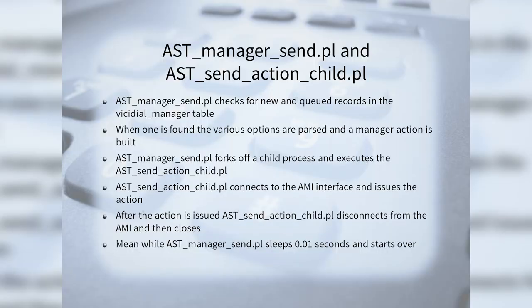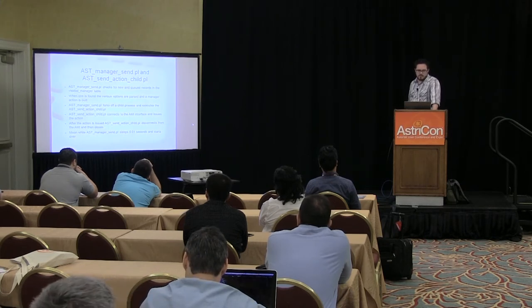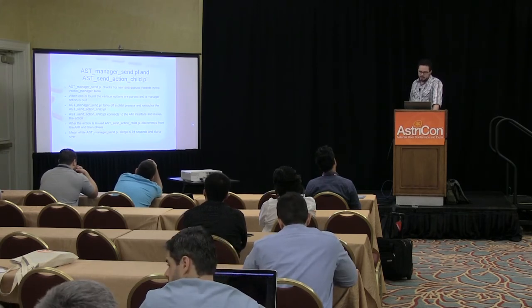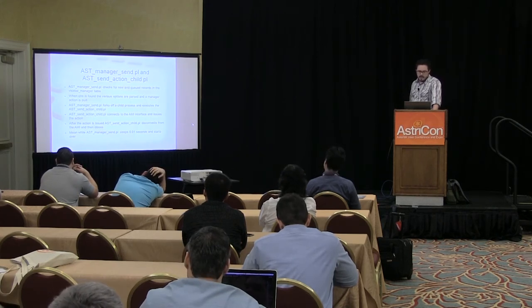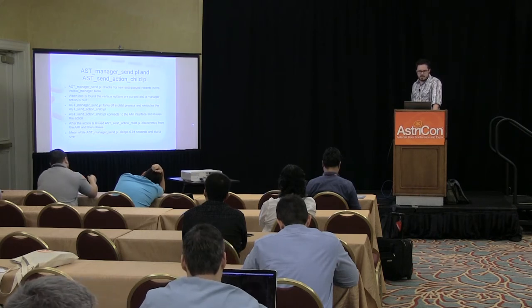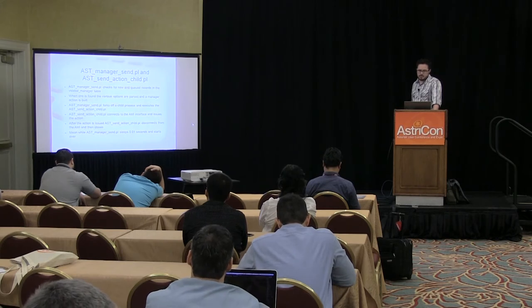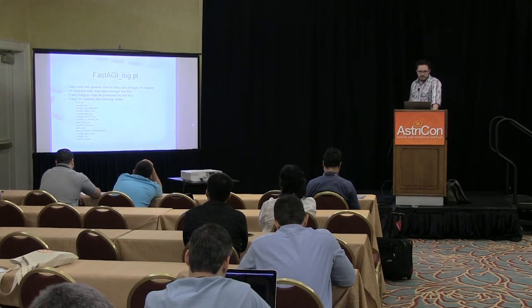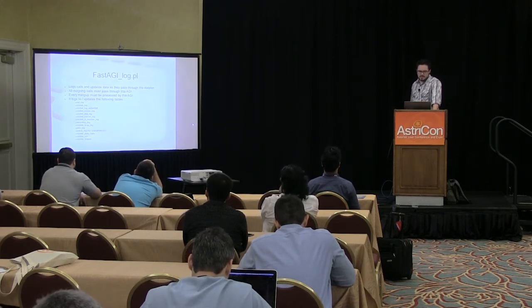AST manager send checks for new and queued events in the ViciDial managers table. When one is found, various options for that event are parsed and a manager action is built. The manager send script forks off a child process and executes the AST send action child script, which connects to the AMI, issues the action, then disconnects. Meanwhile, AST manager send sleeps for a hundredth of a second and starts all over — so every hundredth of a second it was issuing AMI events if there were ones available.